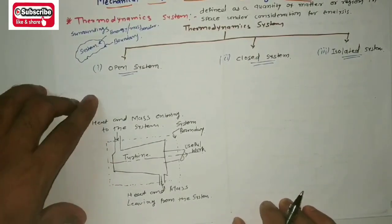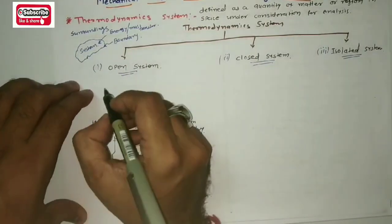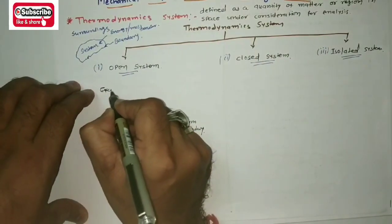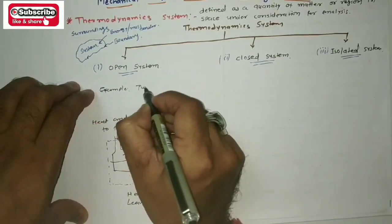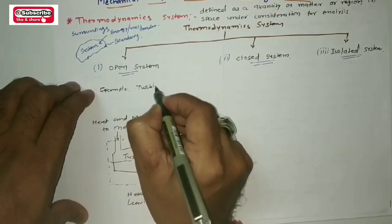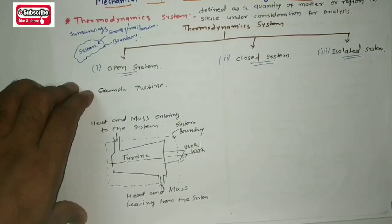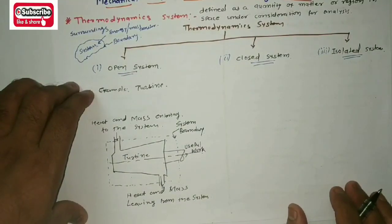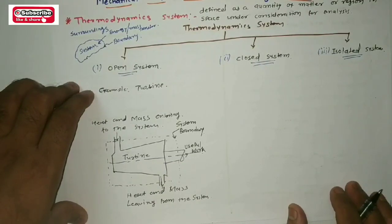You can write down 'heat and mass leaving from the system.' Such an example of the turbine is considered as an open system. You can also consider an IC engine as an example of an open system.